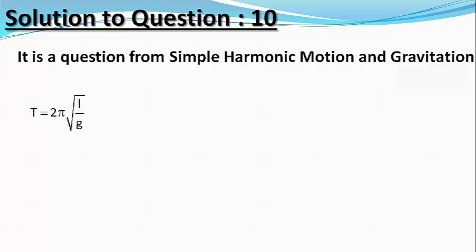where L is the length of the pendulum and g is the acceleration due to gravity on that planet.